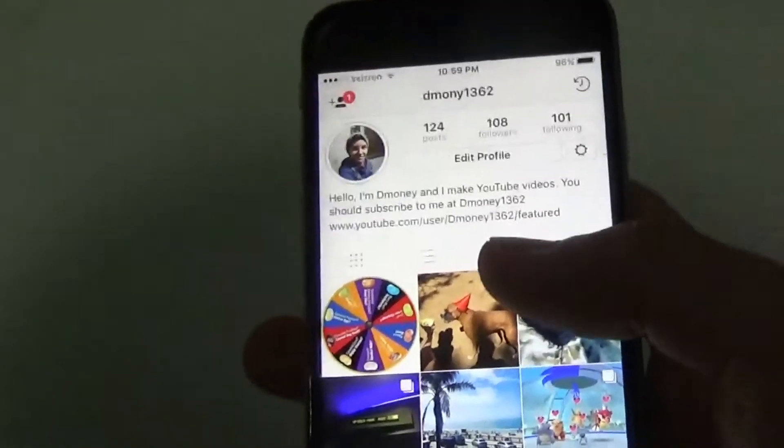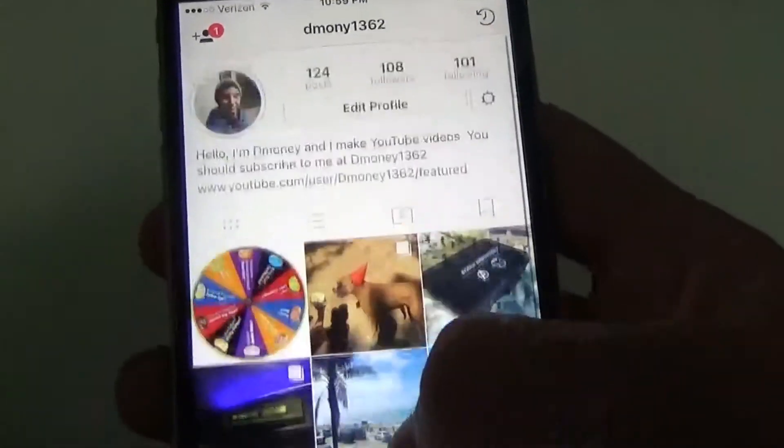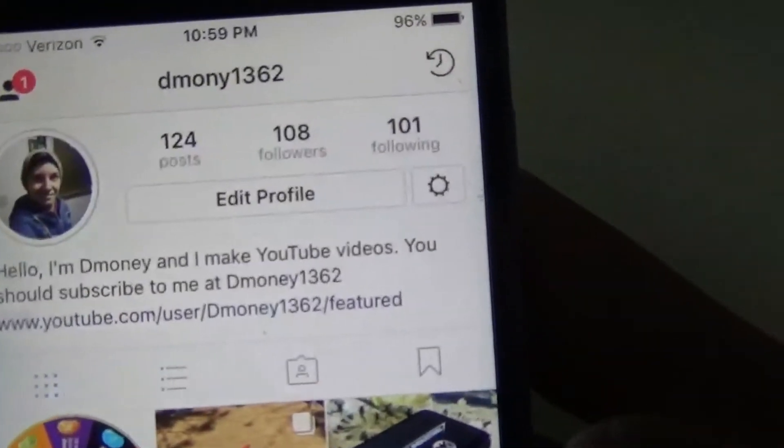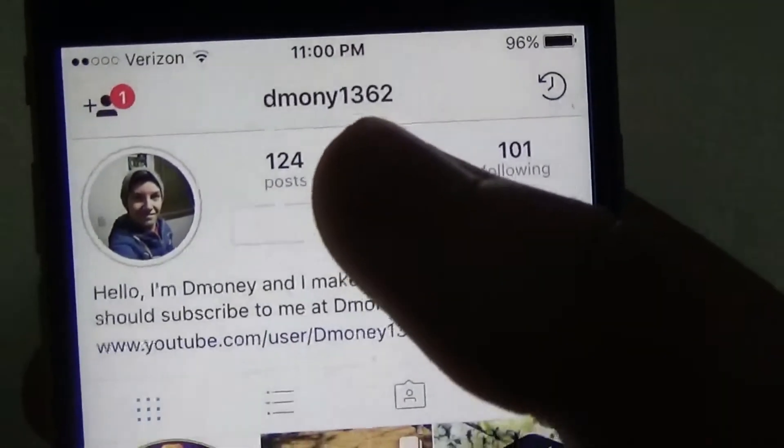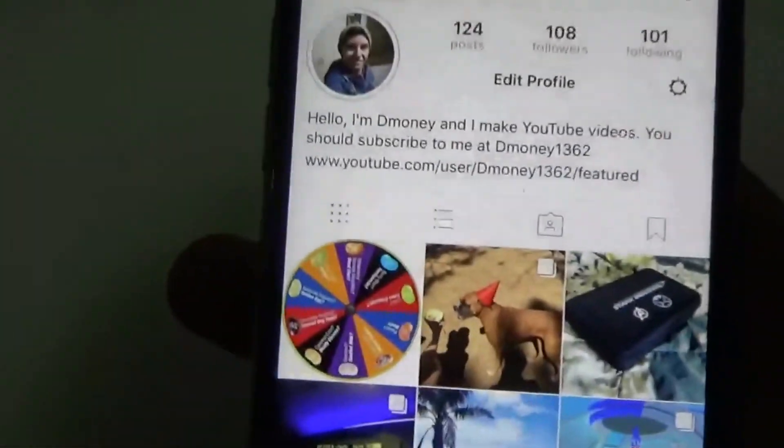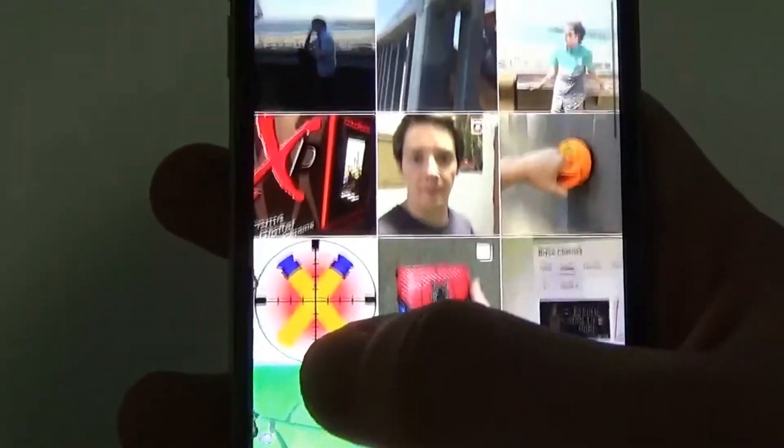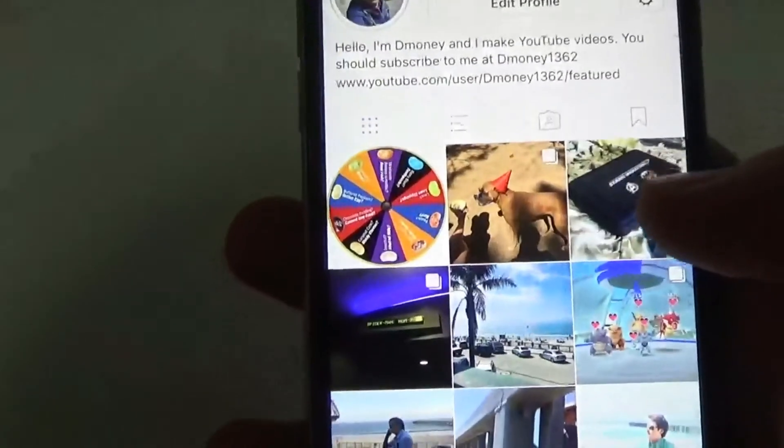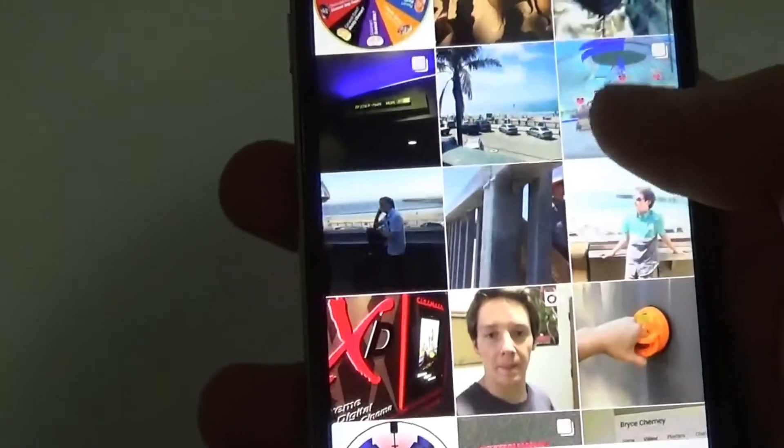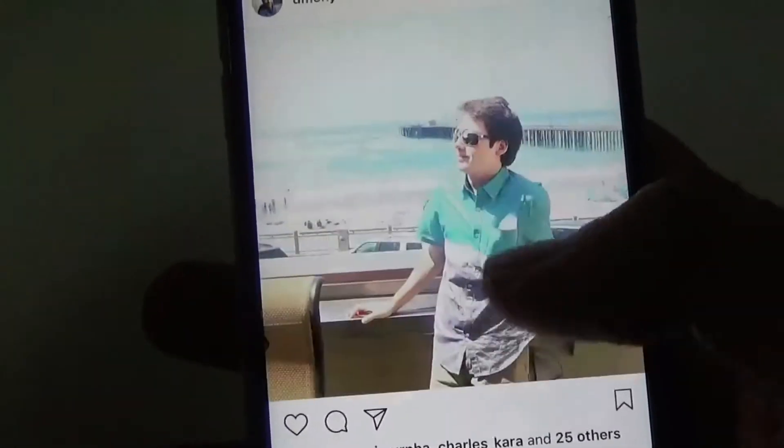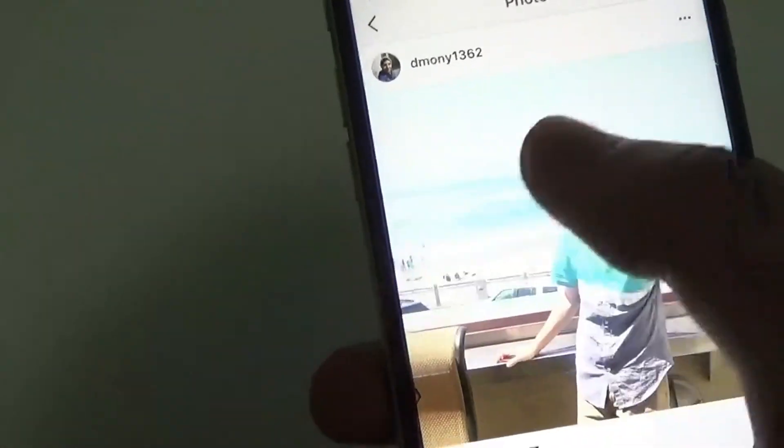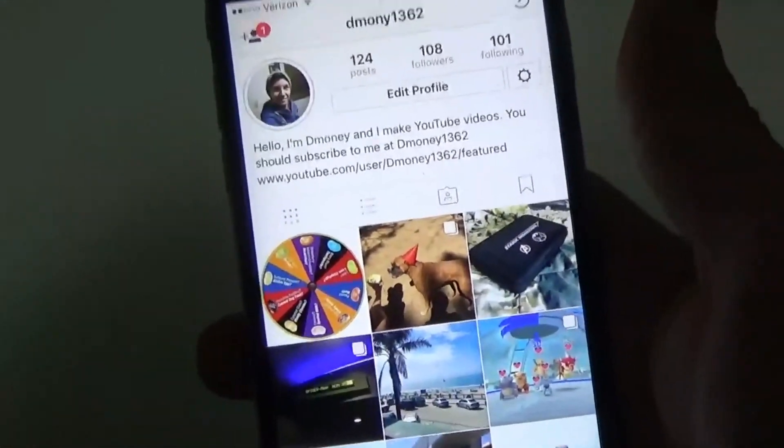For those of you who don't know, I have an Instagram - please go follow me at dmoney1362. I know there's no 'e', that's how I used to spell it. And I post a lot of fun stuff. I let you guys know if I'm making a video or just uploaded one, and I like to do a lot of cool funny poses sometimes, and I even post on my story a lot lately.